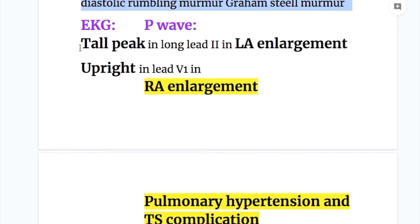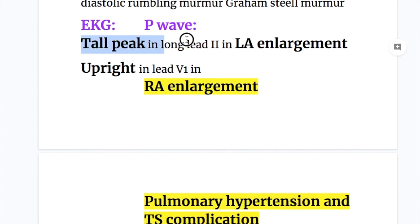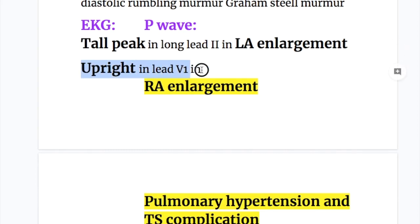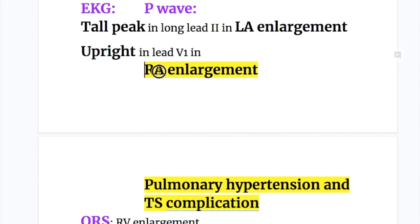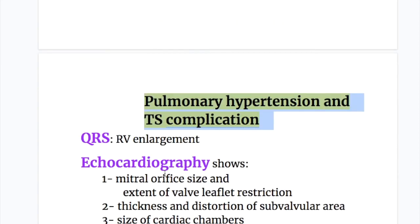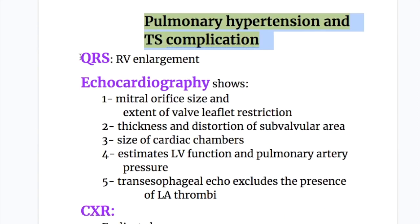ECG findings in mitral stenosis: P-wave changes include a tall peaked P-wave in lead 2 due to left atrial enlargement. An upright P-wave in lead V1 occurs when there is right atrial enlargement from pulmonary hypertension and tricuspid stenosis complication. The QRS complex shows right ventricular enlargement.